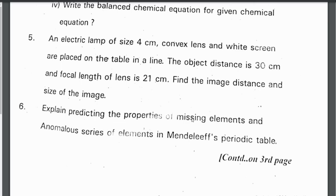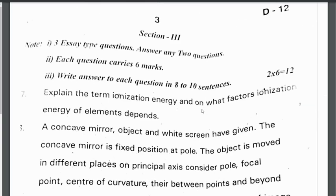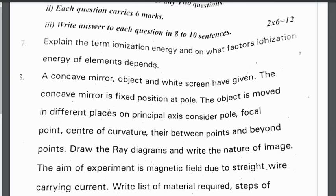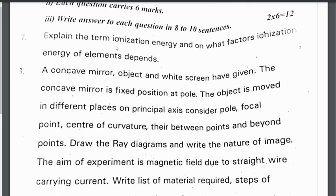Explain predicting the properties of missing elements and anomalous series of elements in Mendeleev's periodic table. Section 3 are long answer questions — three questions will be given, we have to answer two questions, and each question carries six marks.